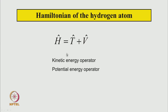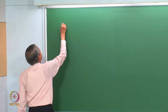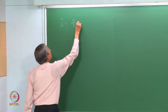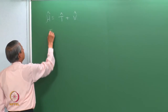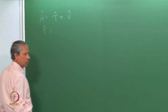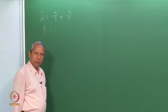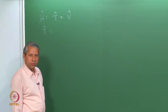What is the Hamiltonian of the hydrogen atom? The Hamiltonian operator is a sum of the kinetic energy operator and the potential energy operator. For the hydrogen atom, T and V can be written as the kinetic energy of the electron and the kinetic energy of the proton.